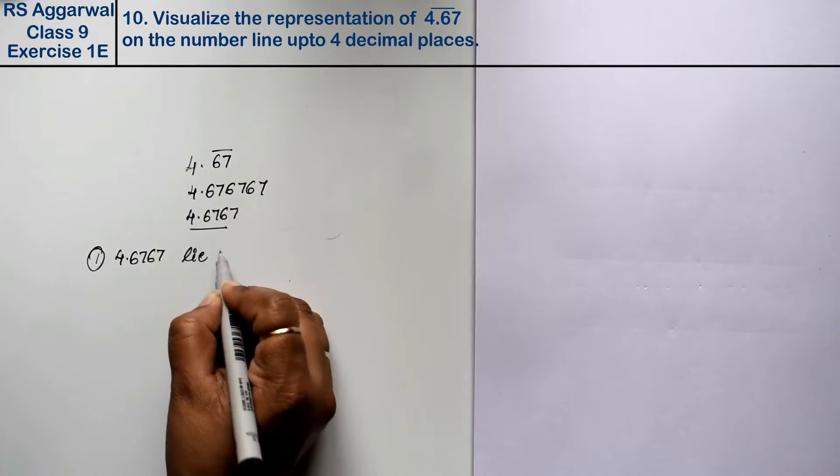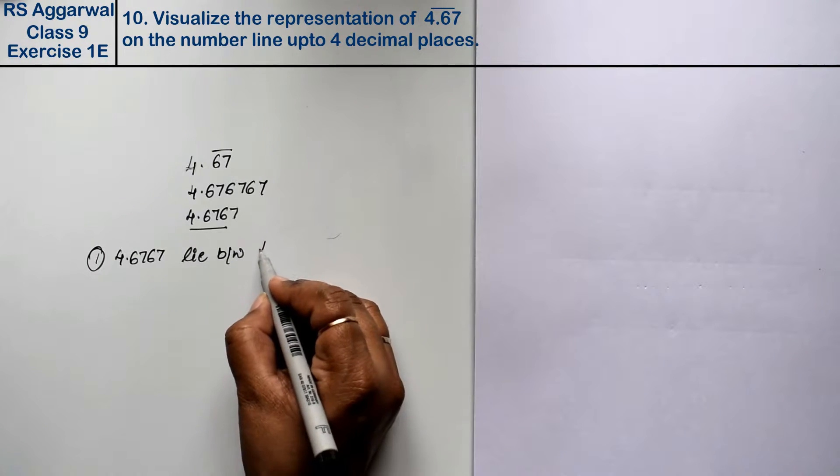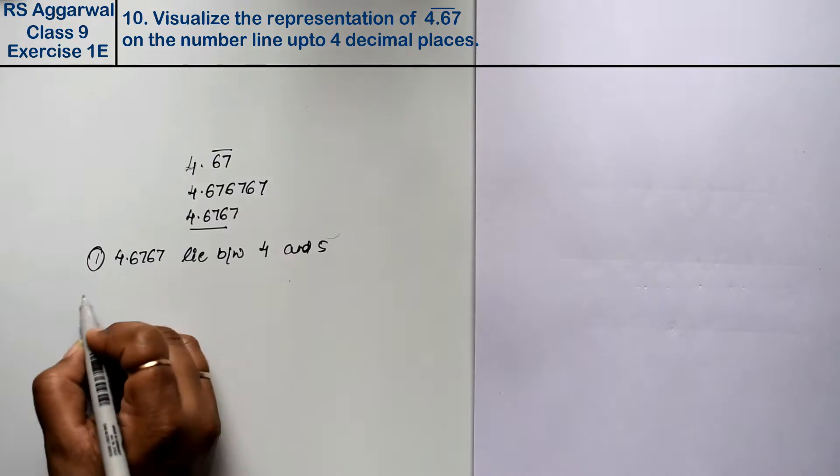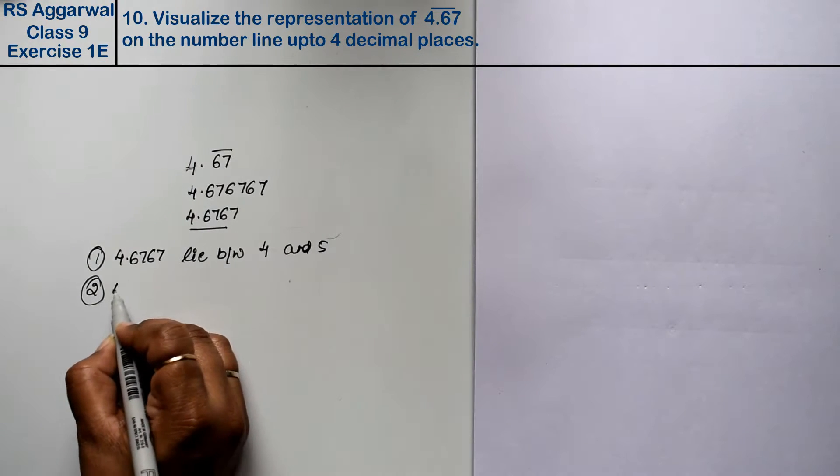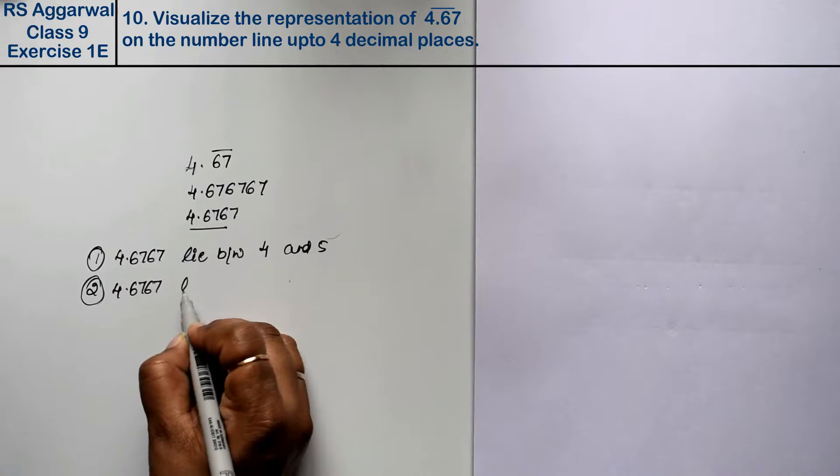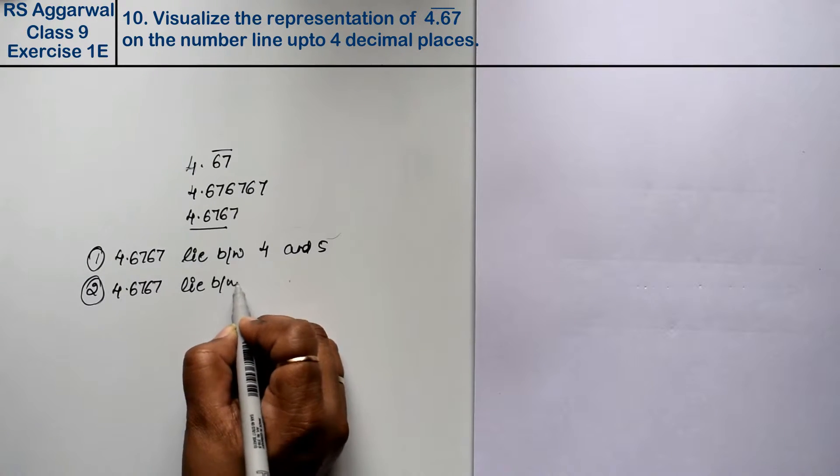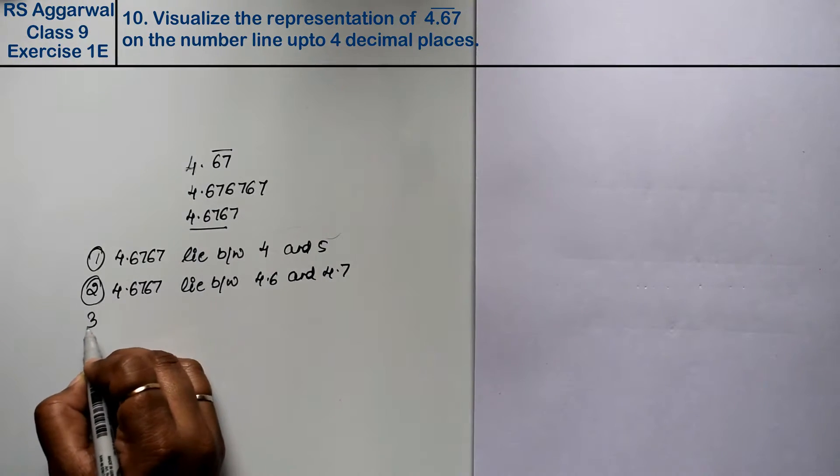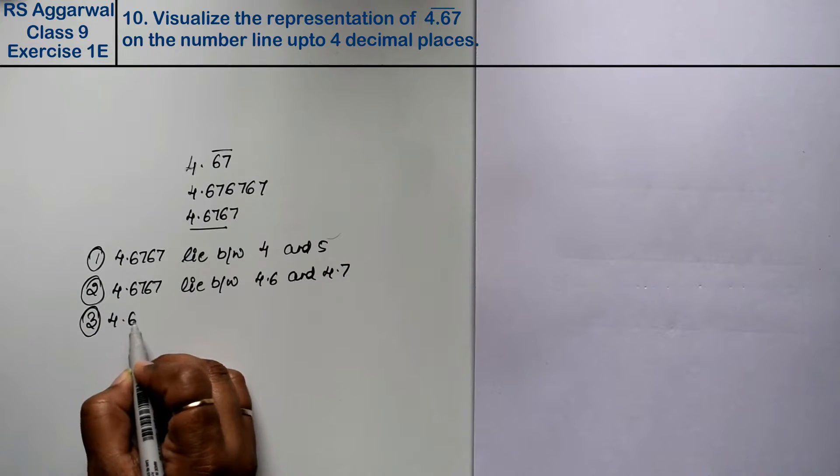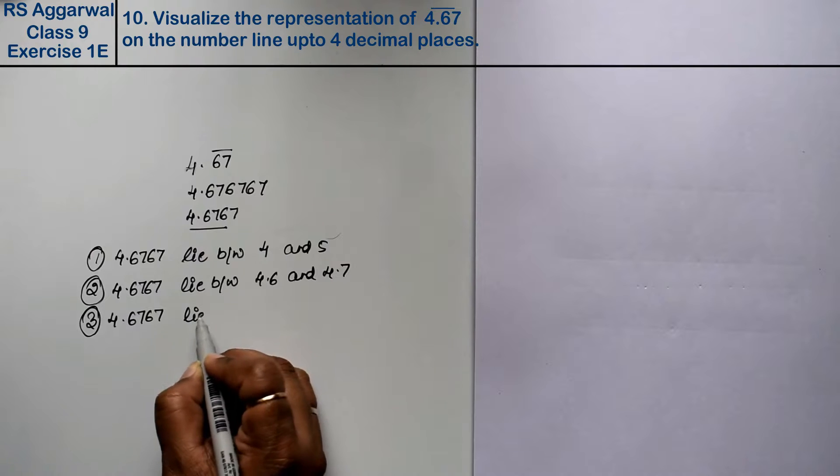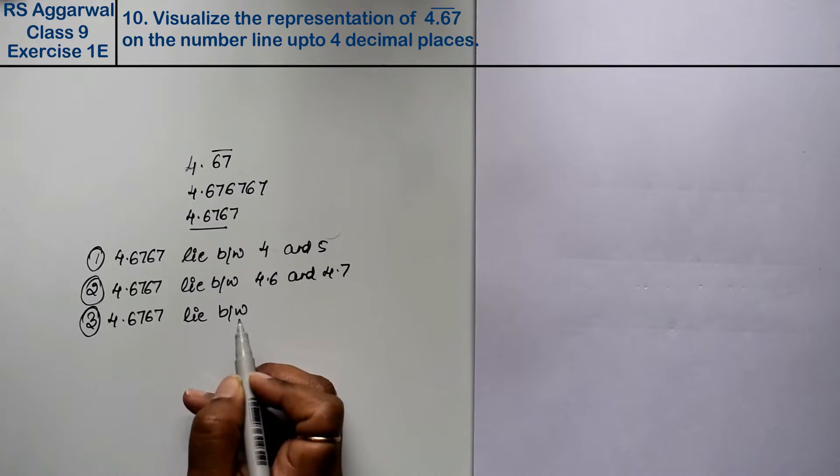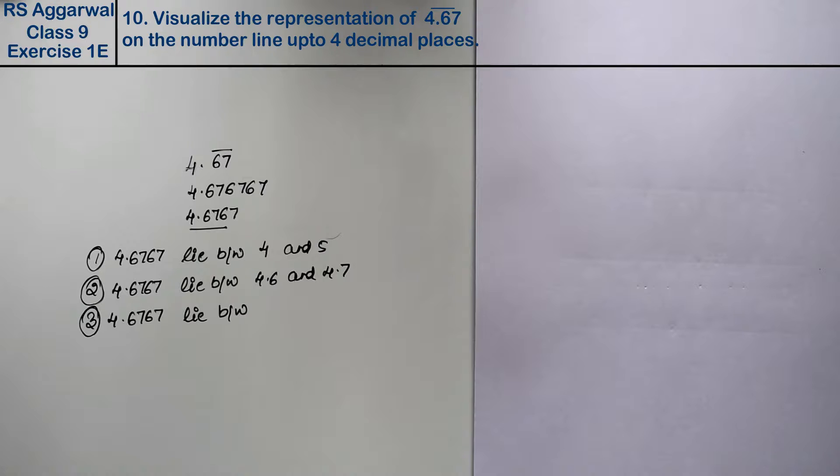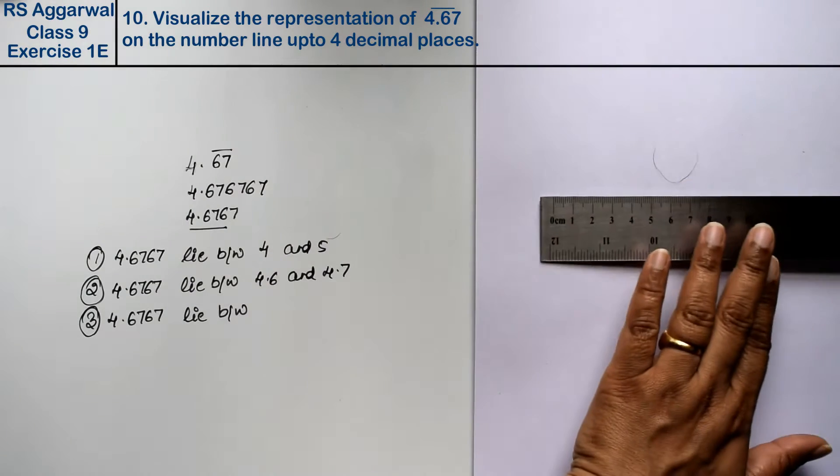For that we have to look at the steps. First point, 4.6767 lies between first step 4 and 5. Second, 4.6767 lies between 4.6 and 4.7. Third, 4.6767 lies between, if you cannot figure out the point, you can also find points through the number line.